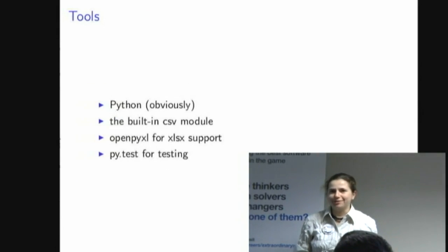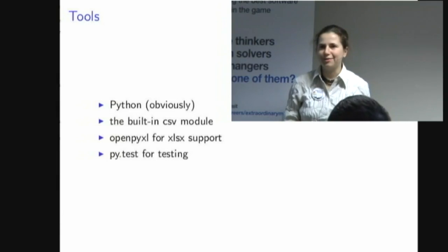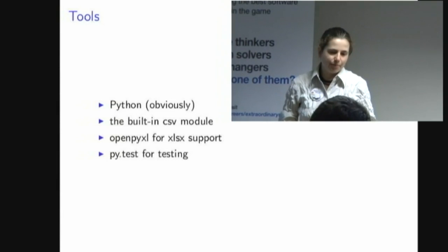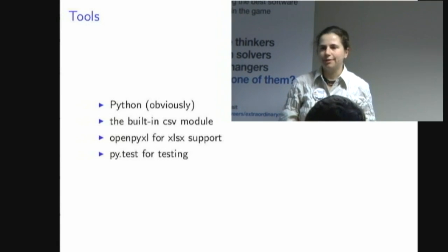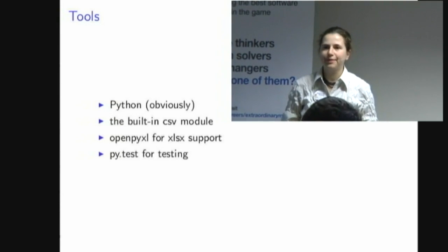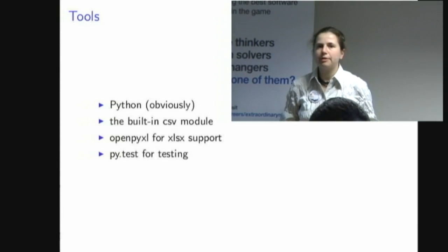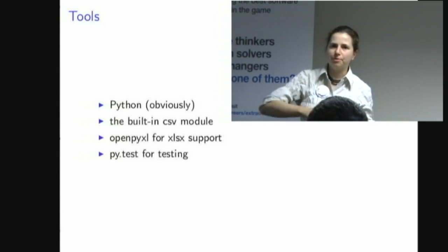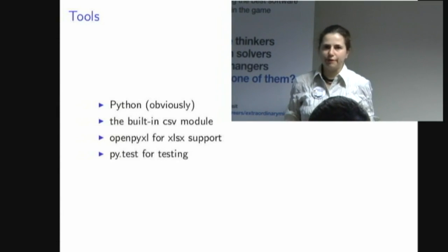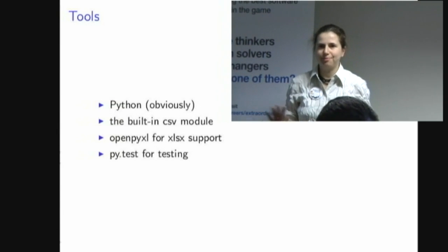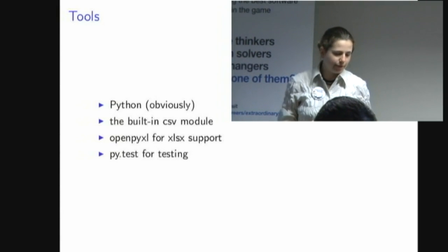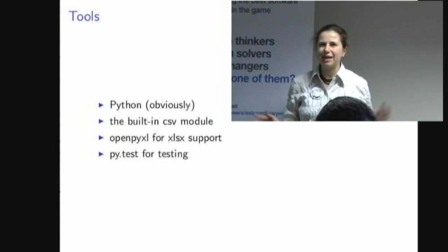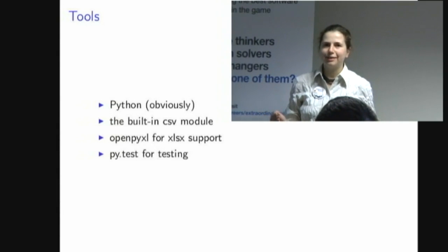What tools did I use? Obviously Python, because this is a Python conference. Python has a built-in CSV module which does pretty much anything you might want to do with CSV, tab-separated, or any kind of file with a predictable separator — very easy to use. Because the files coming out of the plate reader are in XLSX format, I found the OpenPyExcel library, which is pretty good for reading Excel spreadsheets. These are straightforward files — essentially just a CSV in a different format — and we don't have to save anything back to that format, so it's pretty much met our needs. I used pytest as a testing framework because I like its simplicity — it doesn't have a lot of framework cruft, and I like my tests to be as simple and straightforward as possible, just a bunch of plain functions.